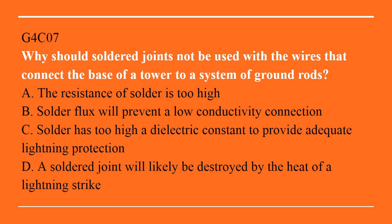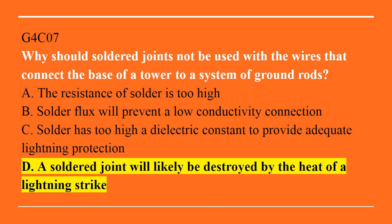G4C07: Why should solder joints not be used with the wires that connect the base of the tower to a system of ground rods? A. The resistance of solder is too high. B. Solder flux will prevent a low conductive connection. C. Solder has too high a dielectric constant to provide adequate lightning protection. Or D. A solder joint will likely be destroyed by the heat of a lightning strike. The correct answer is D. A solder joint will likely be destroyed by the heat of a lightning strike.